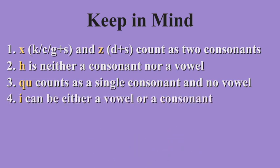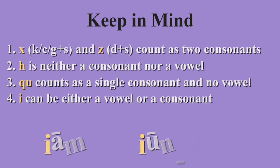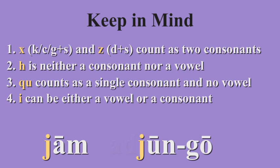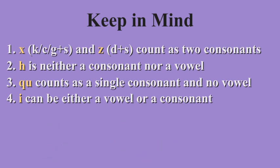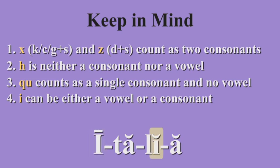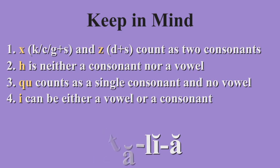Watch out for the Latin I, which can sometimes be a vowel and other times a consonant. The easy rule is that an I at the beginning of a word followed by a vowel is a consonant, pronounced like a Y, like 'iam' or 'iungo.' This stays a consonant even if you put a prefix on the word, like 'adiungo.' But an I followed by a consonant, or by a vowel but later on in the word, is still a vowel — like in the word 'Italia,' four syllables.